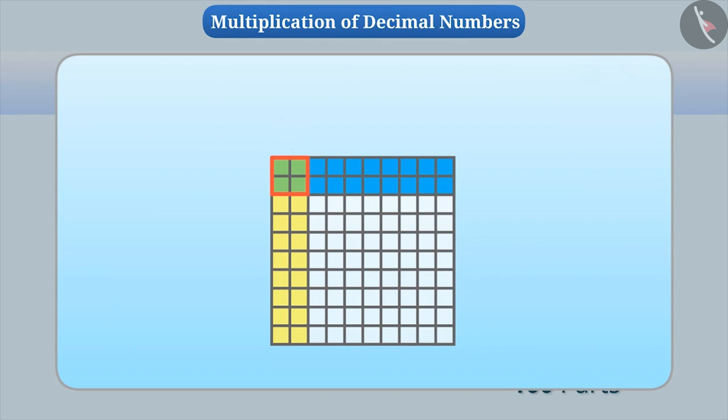Absolutely correct. Here, among both the squares, 4 out of 100 parts are common. This can be written in fraction form as 4 by 100 and in decimal form as 0.04.